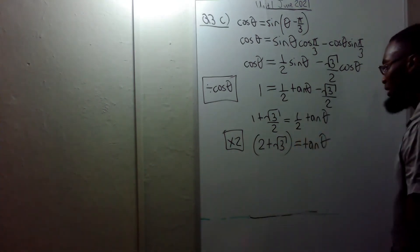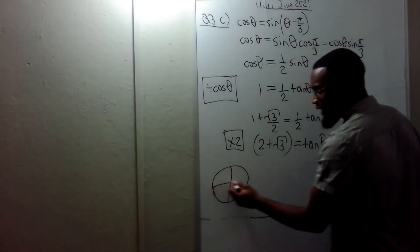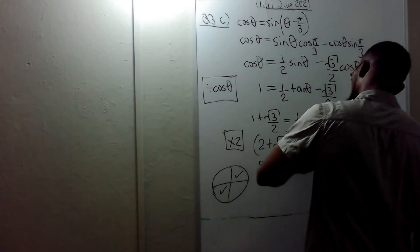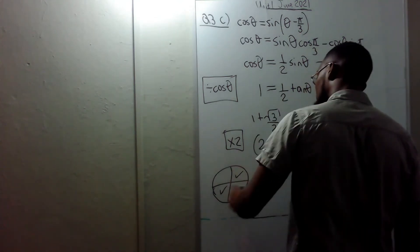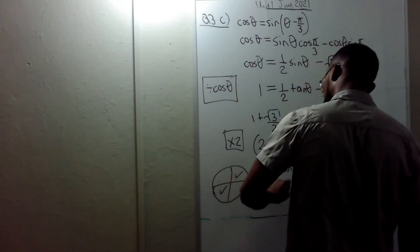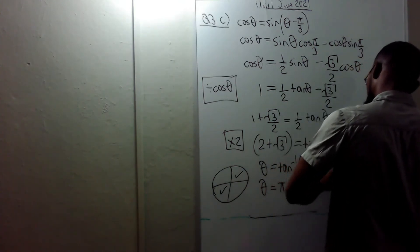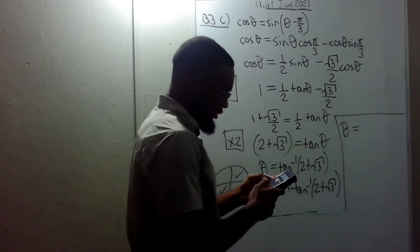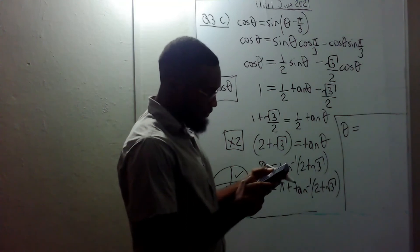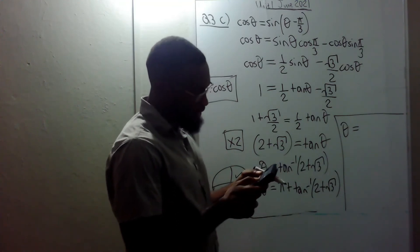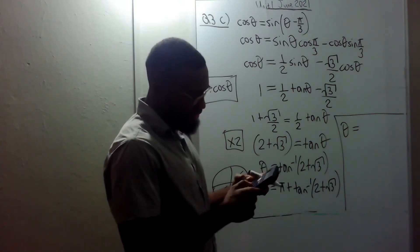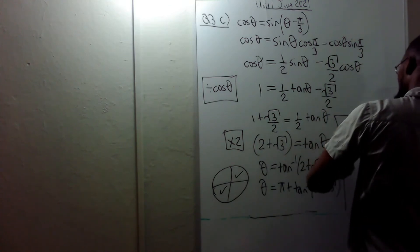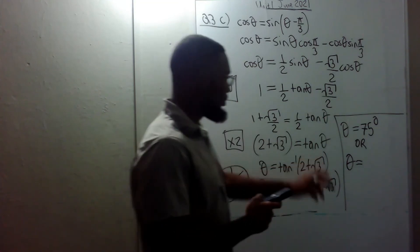Now 2 + √3 = tanθ. Remember tan is positive in the first and third quadrants. So θ = tan⁻¹(2 + √3), and also θ = 180° + tan⁻¹(2 + √3). tan⁻¹(2 + √3) = 75°, so the answers are θ = 75° or θ = 255°.